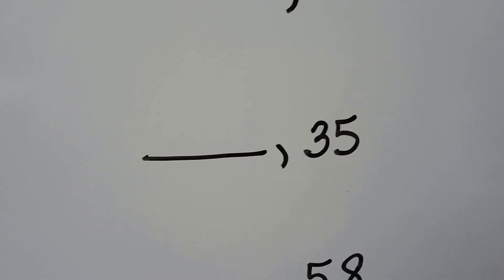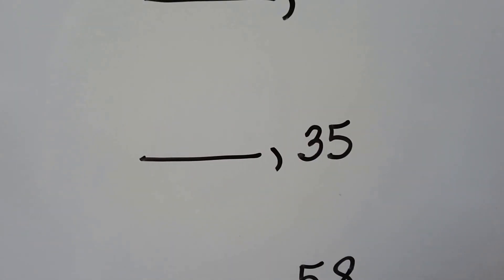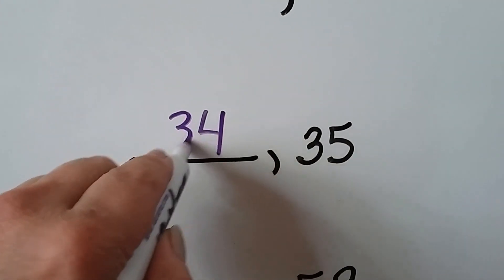What number comes before 35? What number comes before five? A four, so we know it's 34.